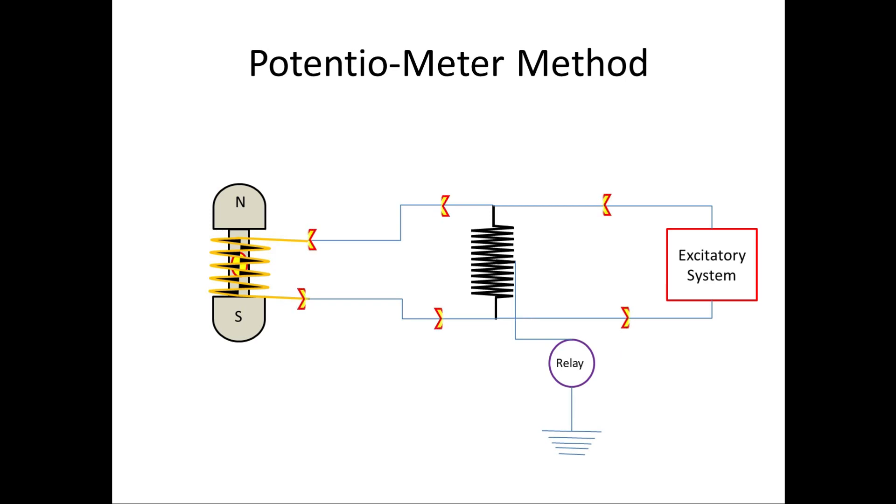Let us consider the rotor coil has earth fault. Now the current will get a path from the relay earthing point. Due to this high resistor ground, the fault current will not be very high, but the relay will detect the fault.